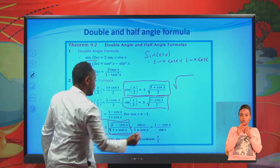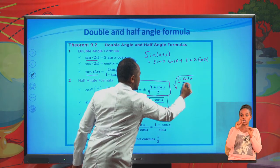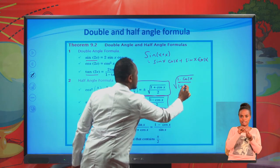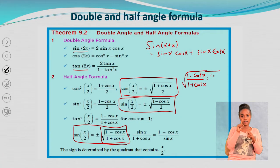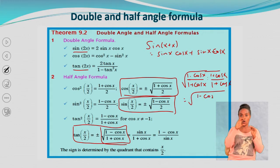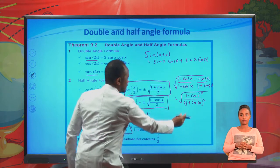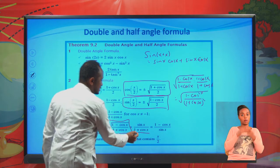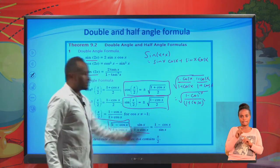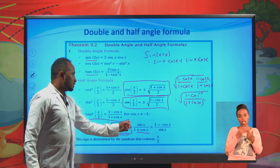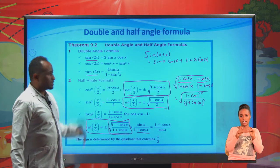We can also write tan x over 2 as the square root of 1 minus cosine x divided by 1 plus cosine x. Multiplying numerator and denominator by 1 plus cosine x, the numerator becomes 1 minus cosine squared x, which equals sine squared x. Taking the square root gives sine x, and the denominator becomes 1 plus cosine x. These are the half-angle and double-angle formulas.